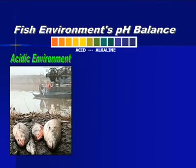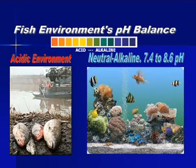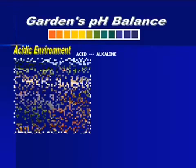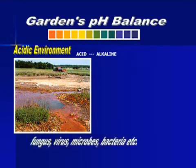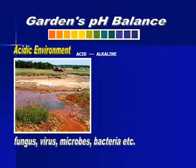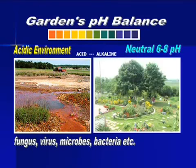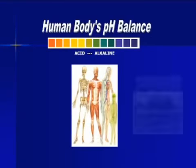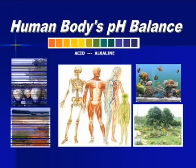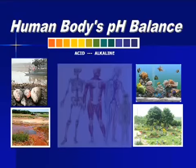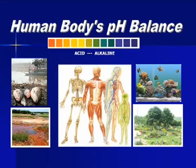This is an example of how an acidic environment is deadly to marine fish life. A marine fish aquarium needs to maintain a pH of 7.4 to 8.6 for fish to survive. Plants cannot grow in a very acidic environment — most plants grow at between 6 to 8 pH balance. Our body is the same. The more acidic our body's cellular environment is, the more susceptible we become to all kinds of health problems.